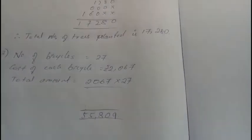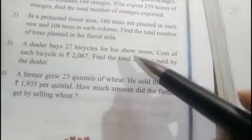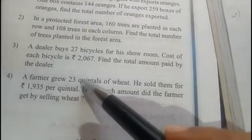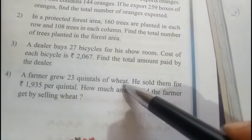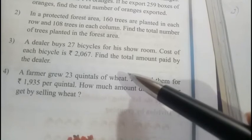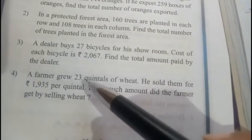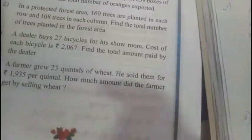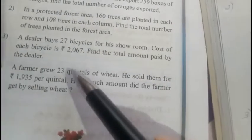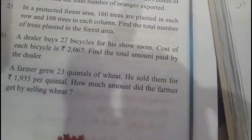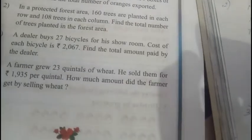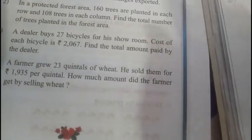We have the fourth question. A farmer grew 23 quintals of wheat. One quintal is 100 kg, right? So one quintal means 100 kg. A farmer grew wheat of 23 quintals.